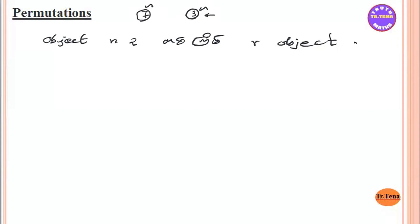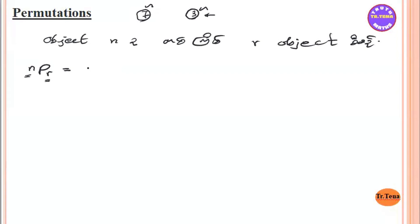The object season is called NPR. NPR is the permutation formula. If you look at the object season, the object is called NPR.